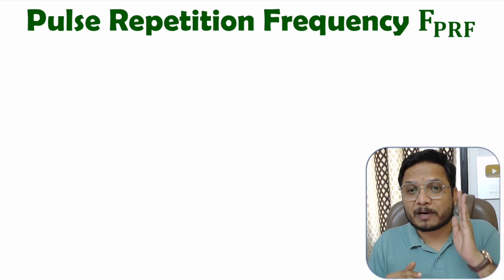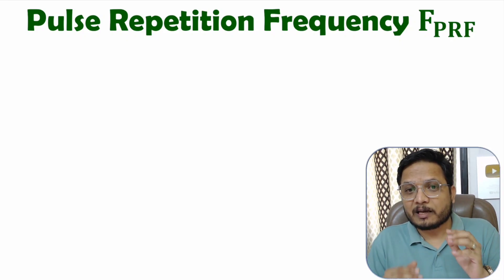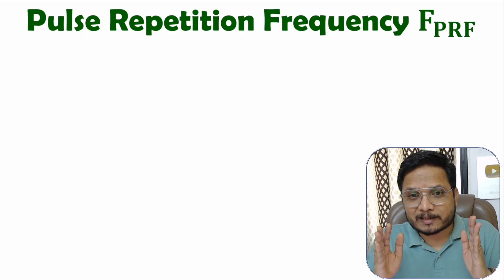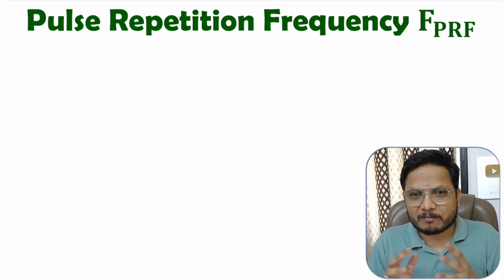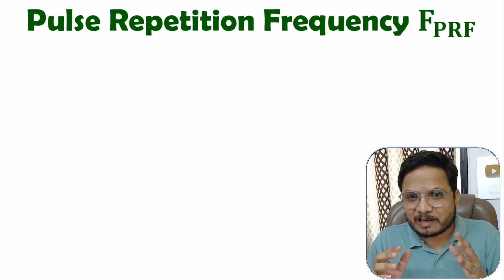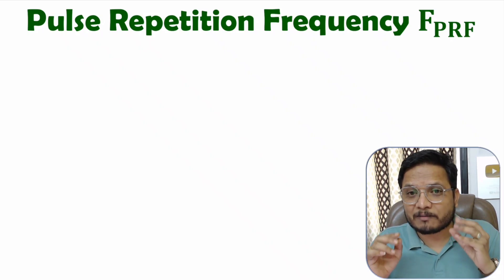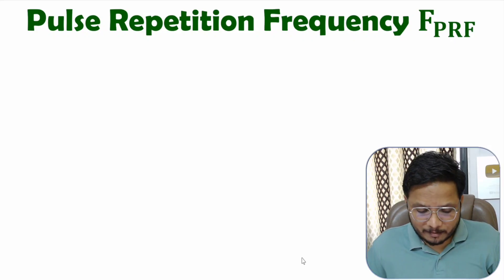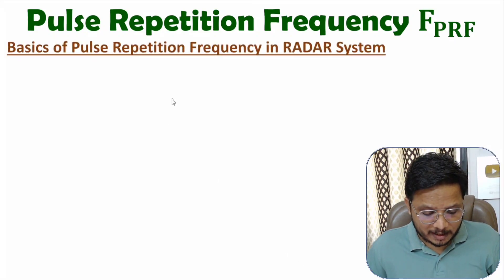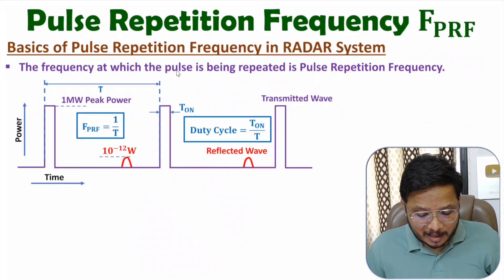In a pulsed radar system, we transmit pulses using a transmitter. If the delay between two consecutive pulses is T, then pulse repetition frequency is 1/T. So pulse repetition frequency explains the rate of transmission of pulses by a pulsed radar system.